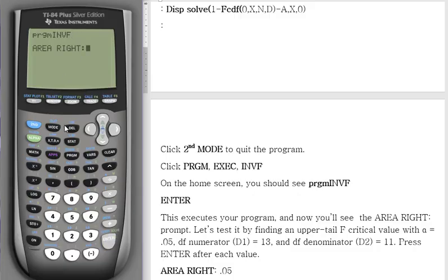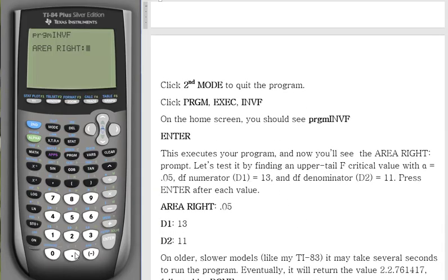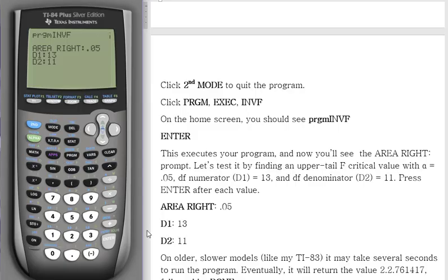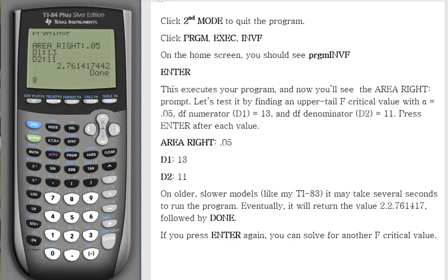it now asks me for data. So let's look at this example problem. Let's say we want an upper tail F critical value with alpha of 0.05. My degrees of freedom for the numerator is 13. Denominator is 11. It might take a little while. Eventually it will return the value of 2.76 and done.